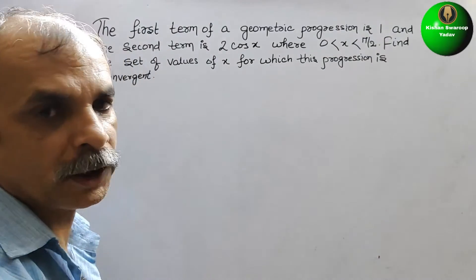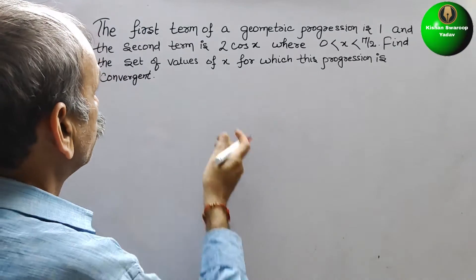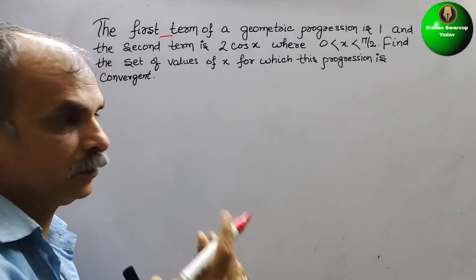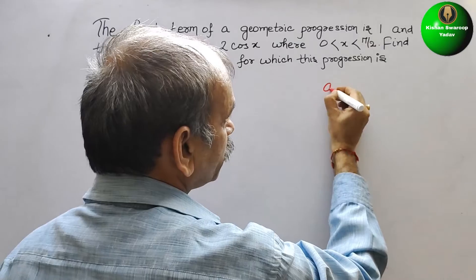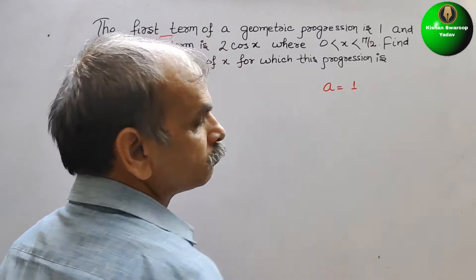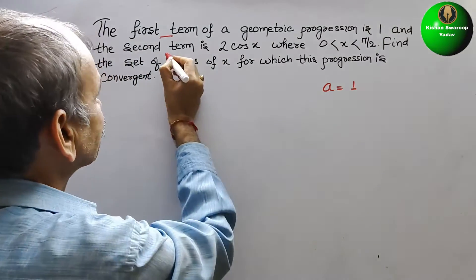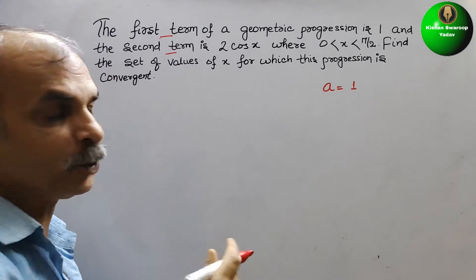Now, see what they have told. They have told the first term, that is a, a is equal to 1. Next, what they have told, the second term, that is a₂.